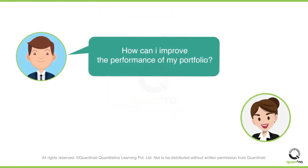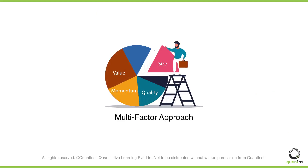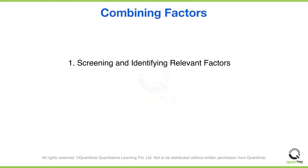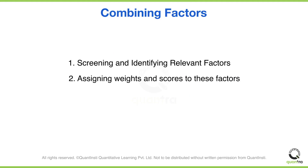So how can I improve the performance of my portfolio? You can do this by combining multiple factors and creating a diversified portfolio. This way you can bring down the risk and improve the overall performance of your portfolio. In this course you will learn the whole process of combining factors, which involves identifying relevant factors, assigning weights and scores to these factors, and finally ranking them.